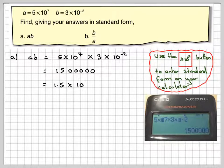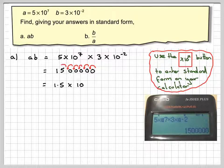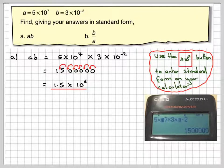So this has to be 1.5 times 10 and we need to put in a power here. To work out the power you go 1, 2, 3, 4, 5, 6. So this is 10 to the 6.